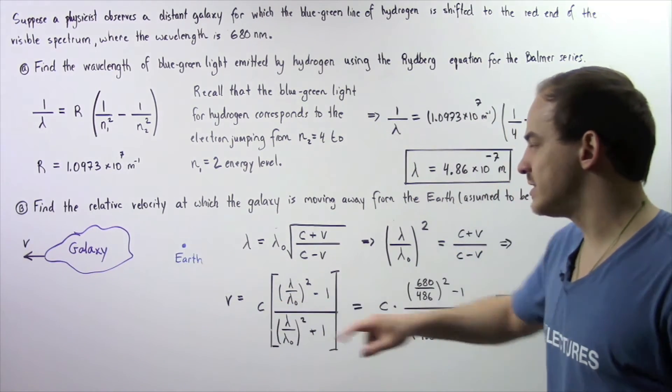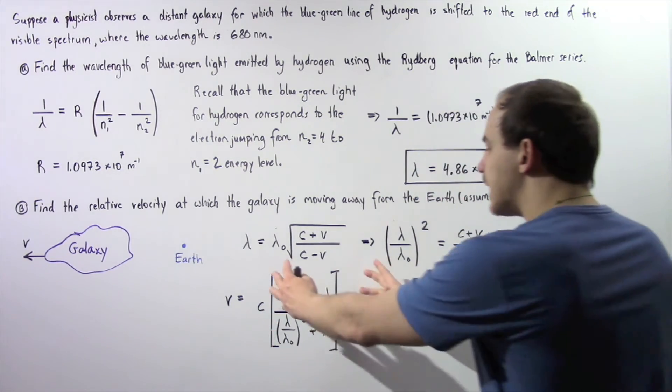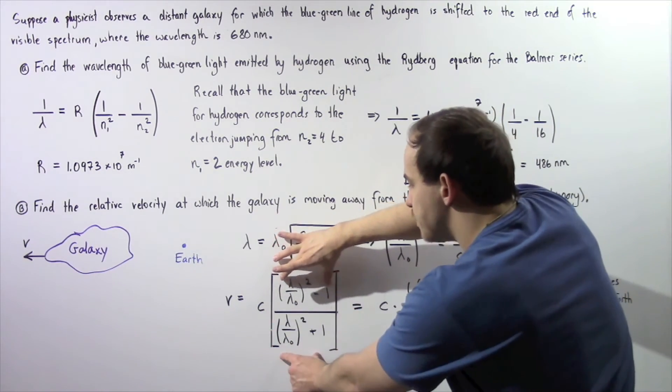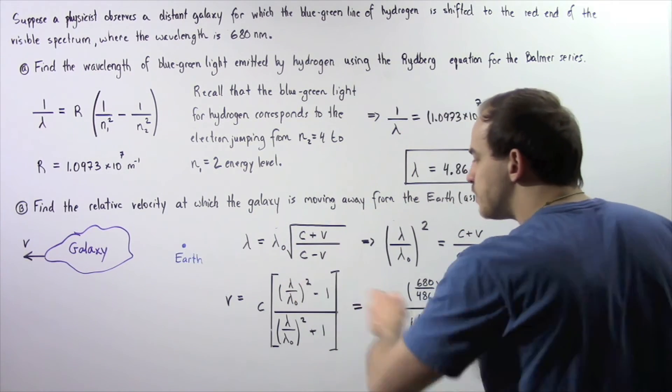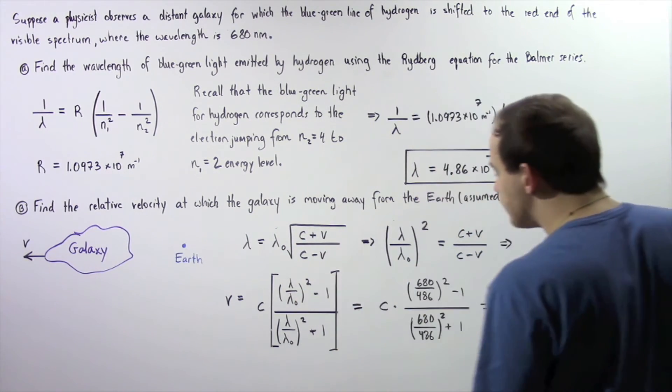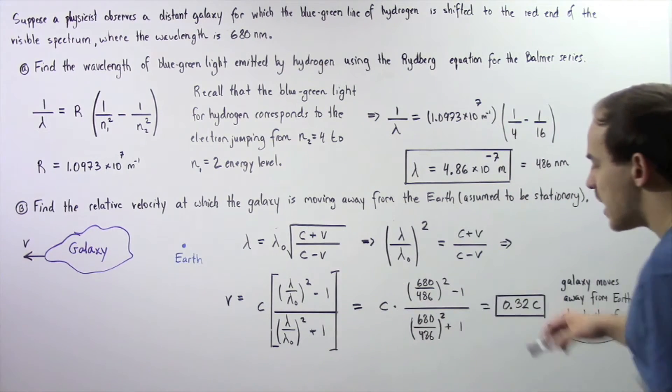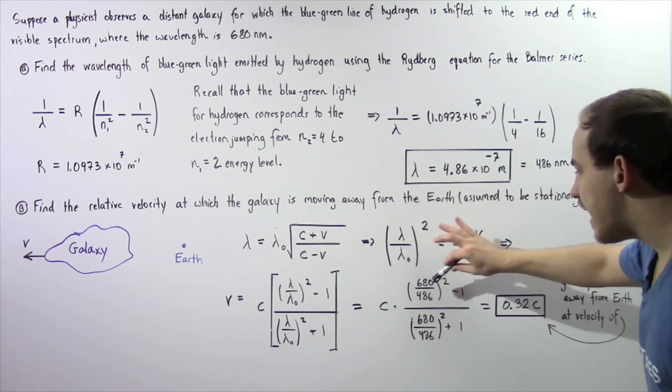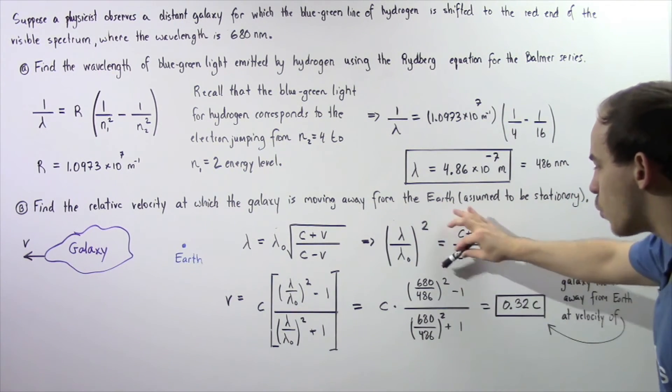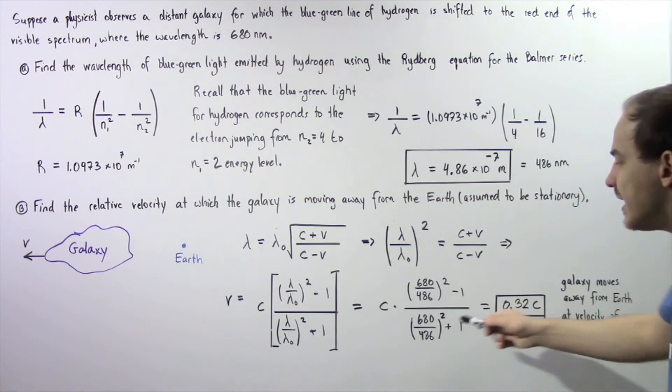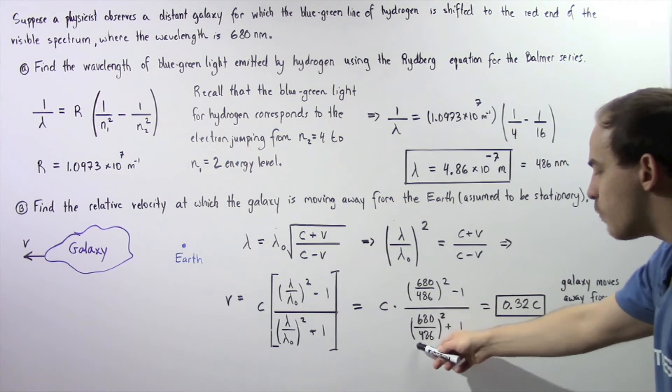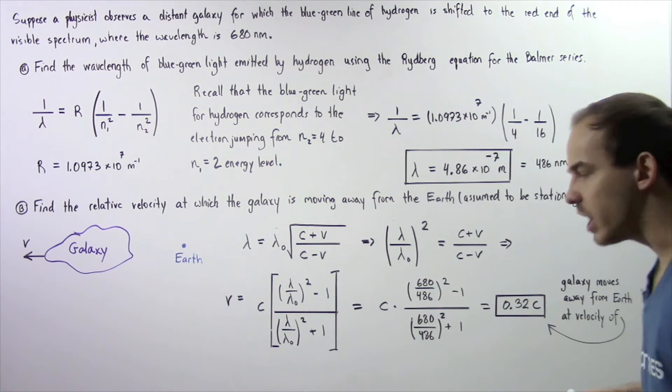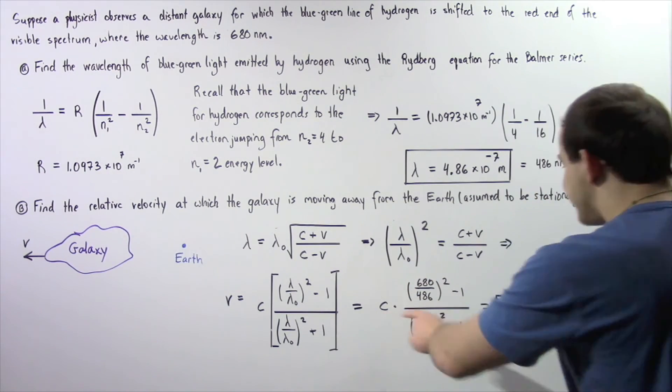Let's plug in our values for λ and for λ₀. So 680 divided by 486 squared minus 1 divided by 680 divided by 486 squared plus 1, and we multiply that by C.